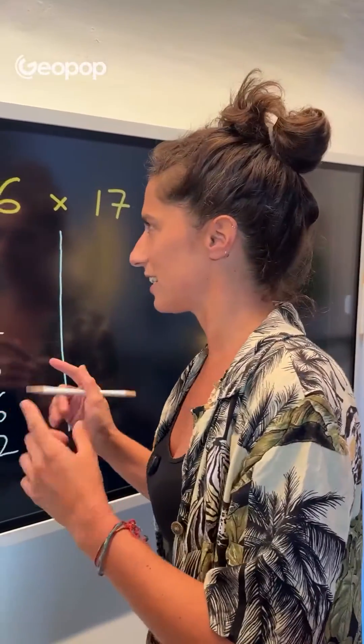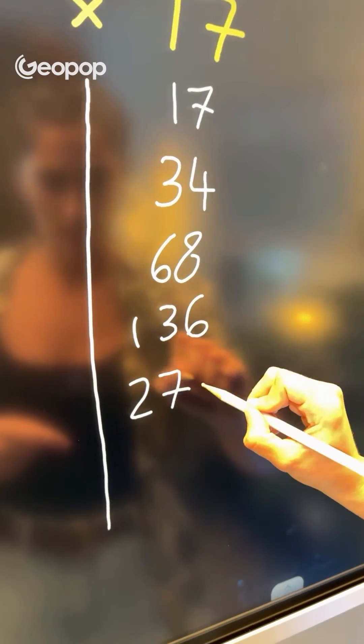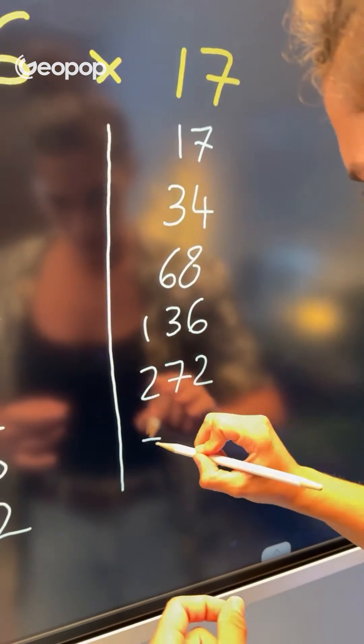Now, under 17, I start from 17 and begin doubling. So I've got 17, then 34, 68, 136, 272, and 544.